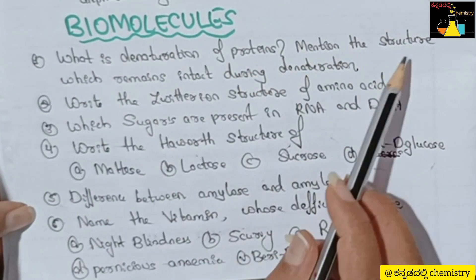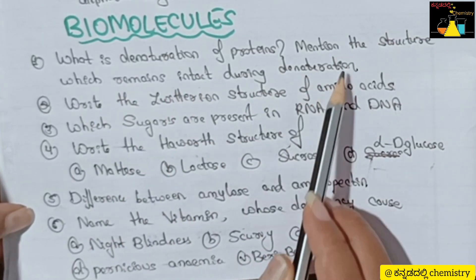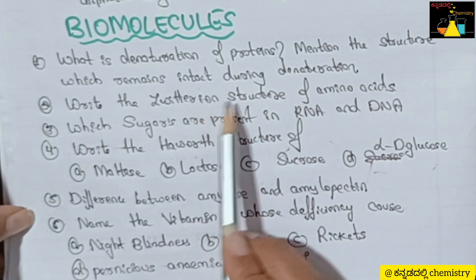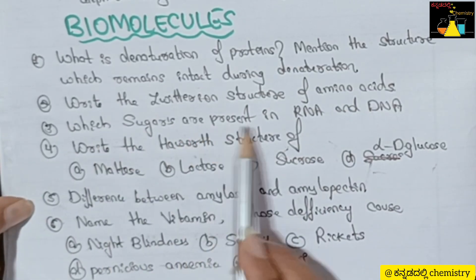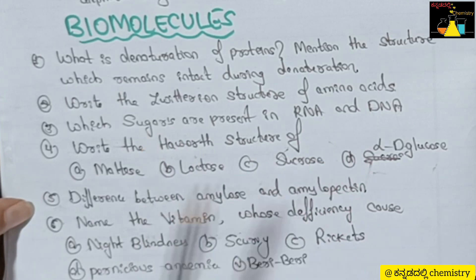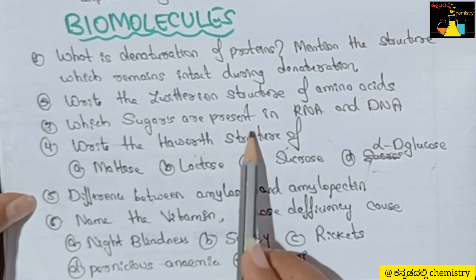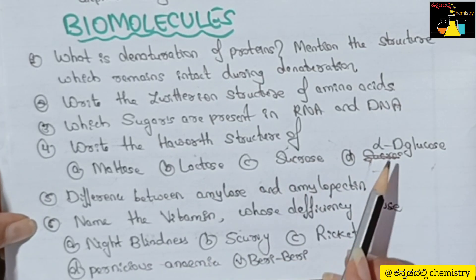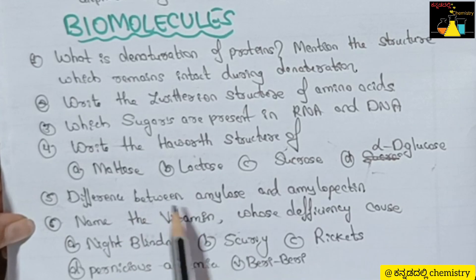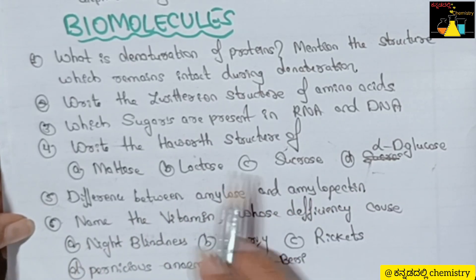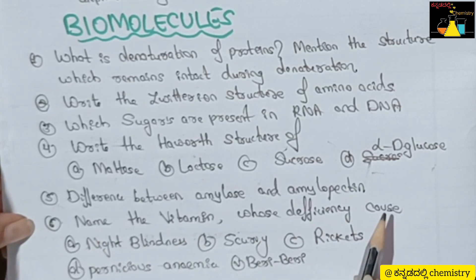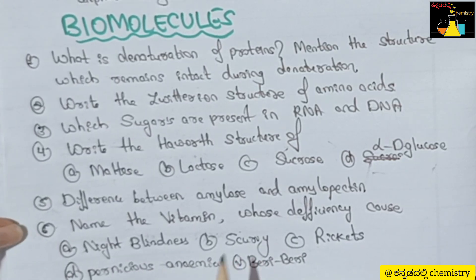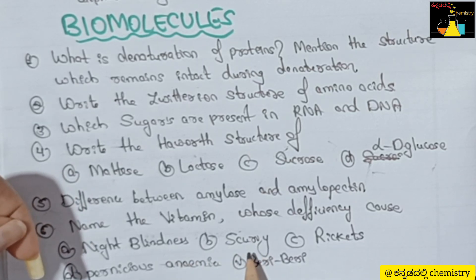From Biomolecules: denaturation of proteins — mention the structure which remains intact during denaturation (3 marks). Write the zwitterion structure of an amino acid. Which sugars are present in RNA and DNA? Write the Haworth structure of glucose. Difference between amylose and amylopectin (3 marks). Name the vitamin whose deficiency causes specific diseases. These are the most important questions from this chapter.